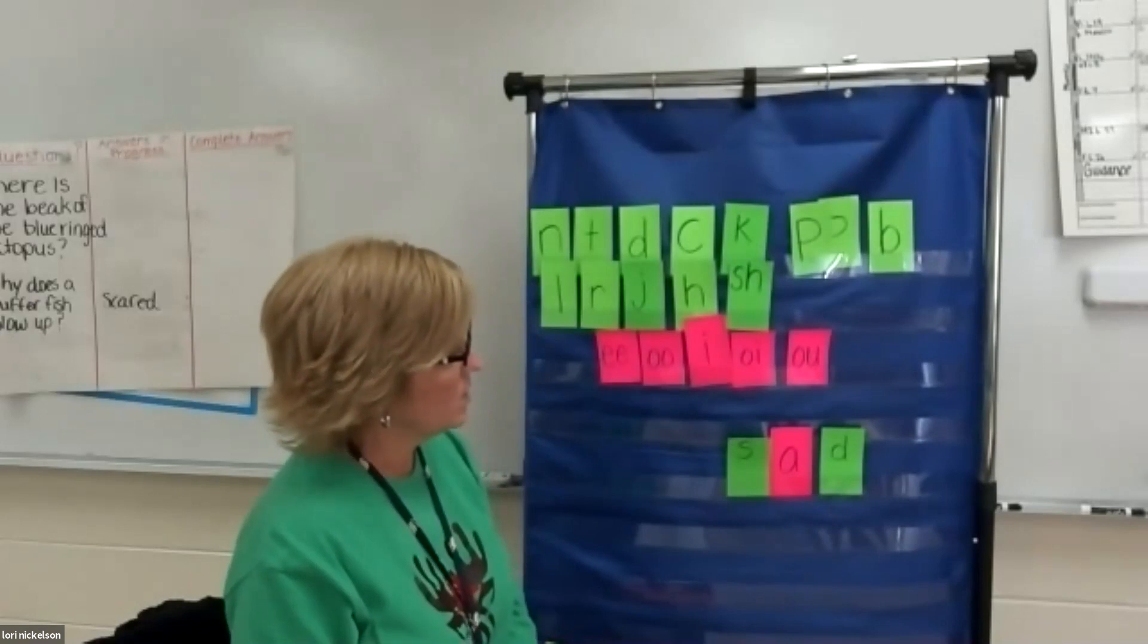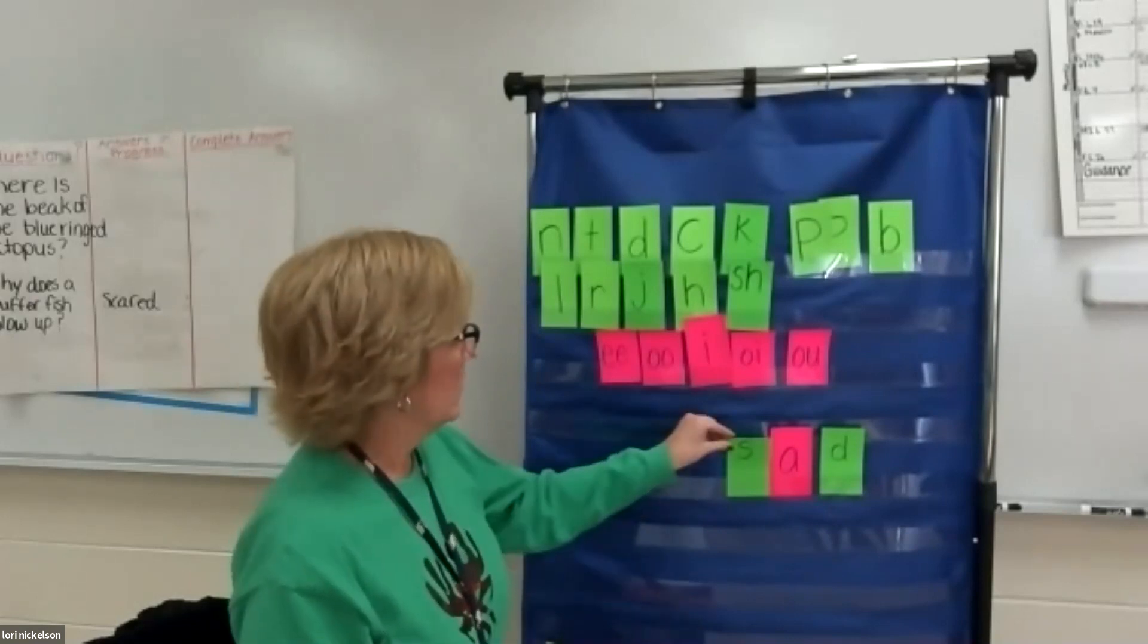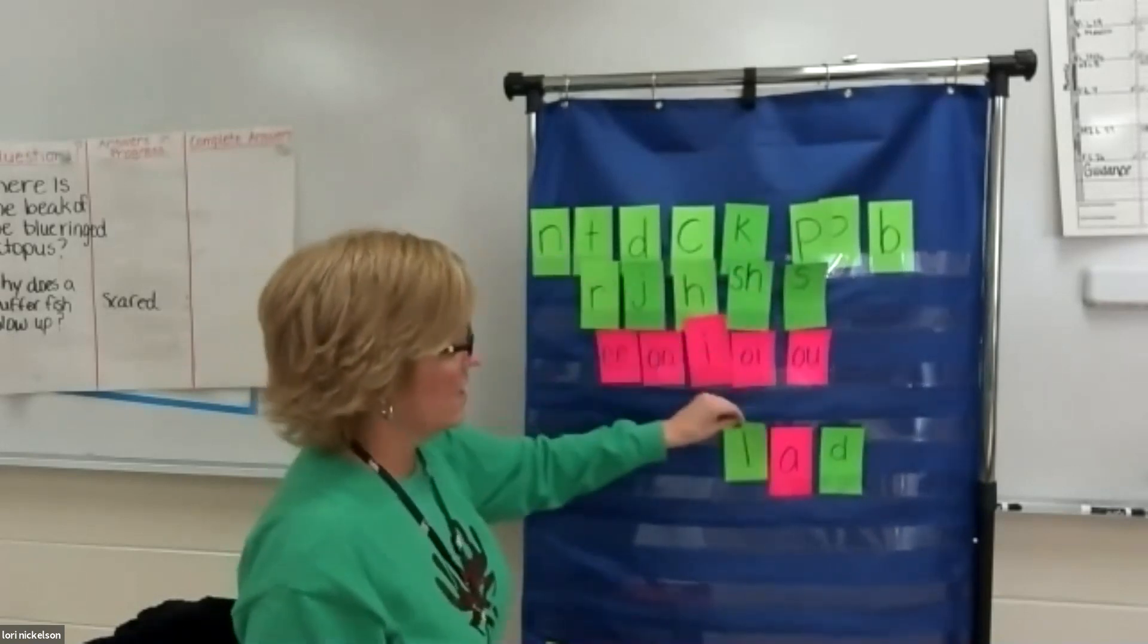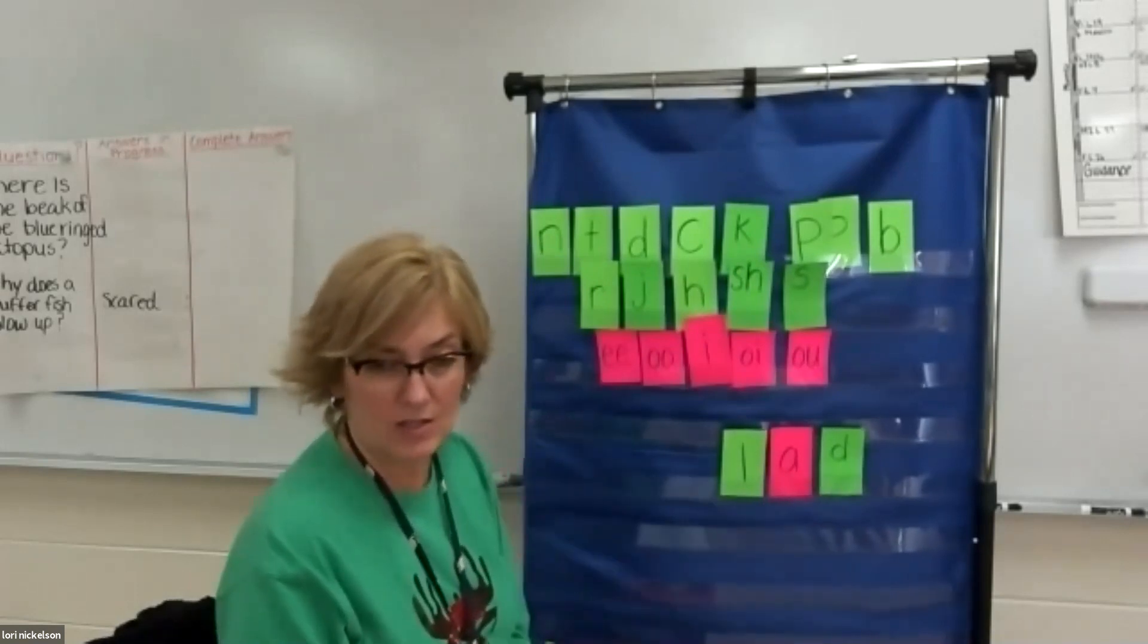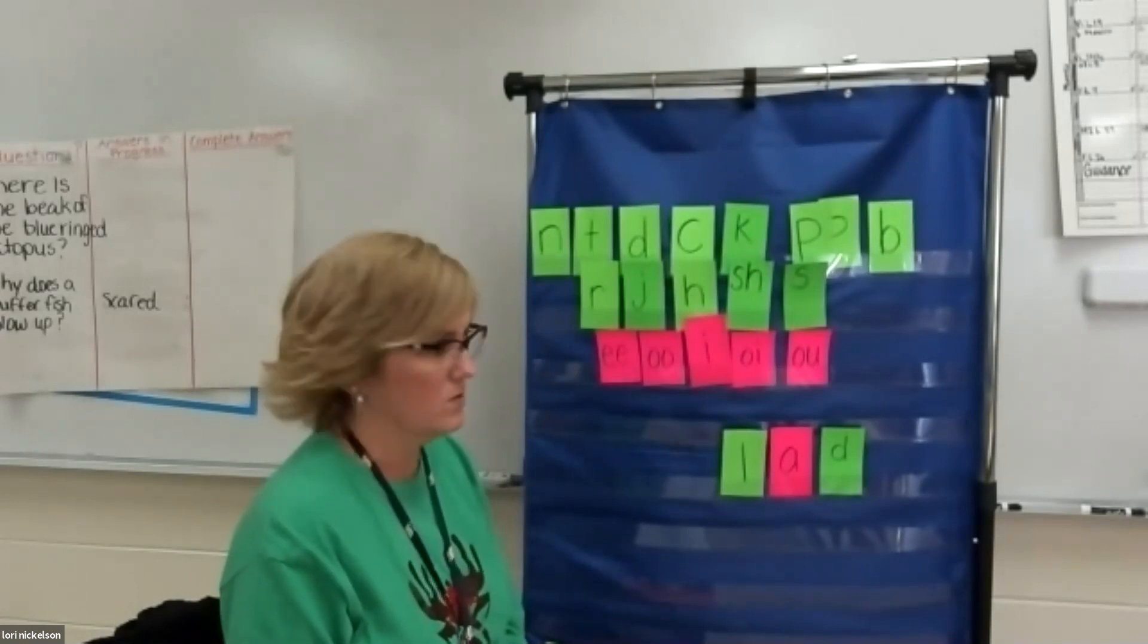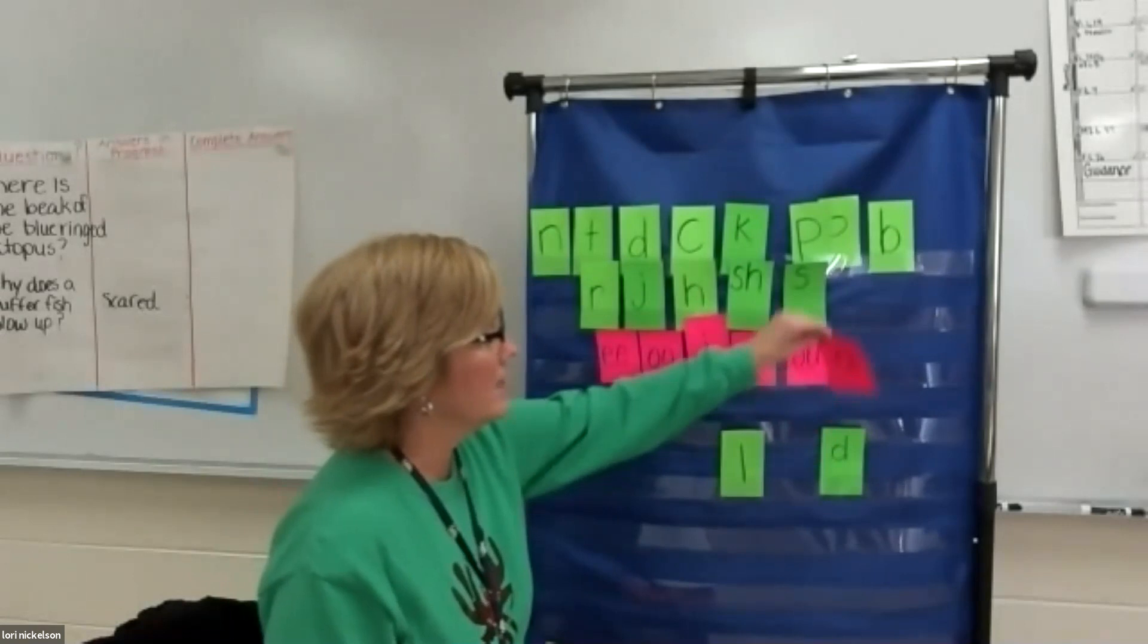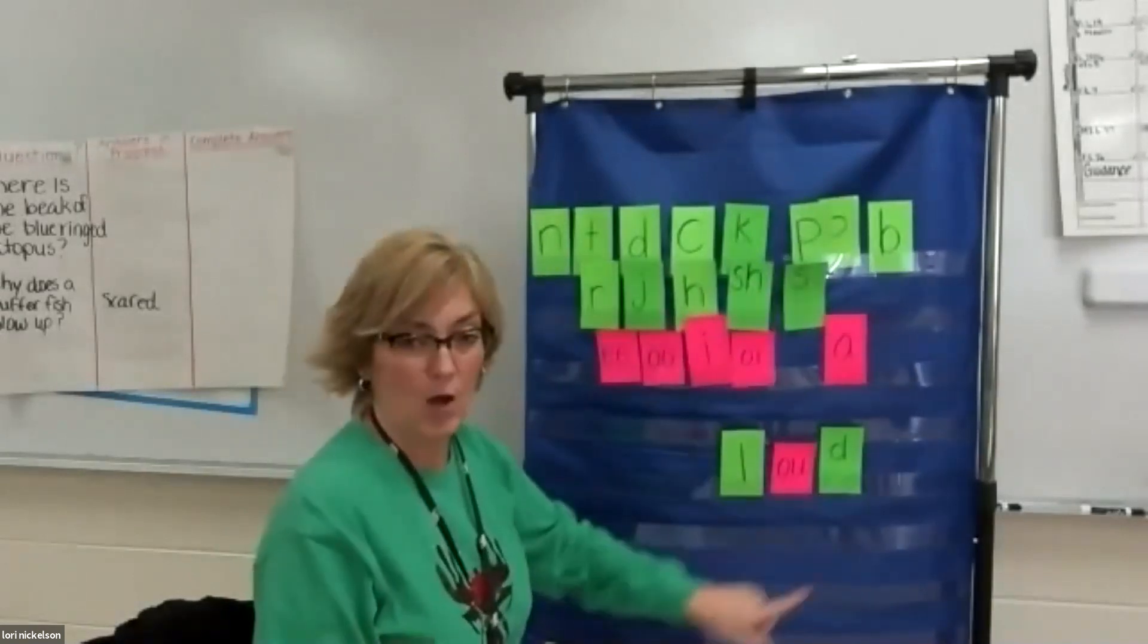So from sad, I want to make the word lad. What would I do? I would move the S and replace it with the L. And now I have lad. Good. For lad, I want to make the word loud. What makes ow sound? Loud. O-U. So we would replace the A with the O-U. And he has loud.